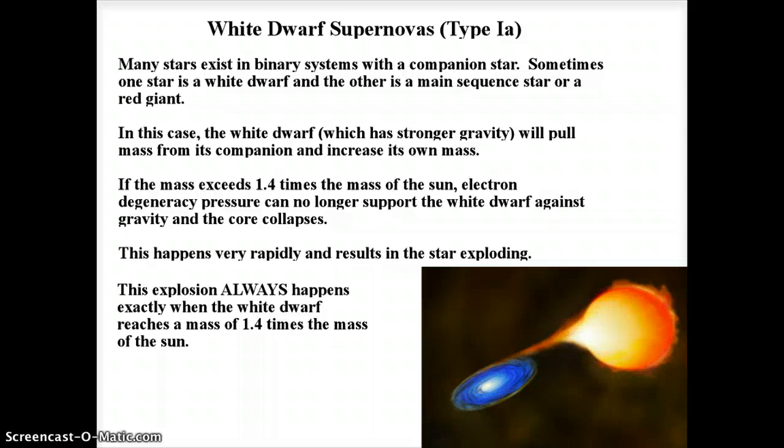The explosion always happens exactly at the moment when it hits that mass of 1.4 times the mass of the Sun. Originally it would have been much smaller. For instance, the Sun will never be 1.4 times the mass of the Sun. It's already less than that and it doesn't have any companions to suck mass from. But Sirius B could do that. Whenever Sirius B starts taking mass from Sirius and then it hits 1.4 times the mass of the Sun, Sirius B will explode as a supernova.